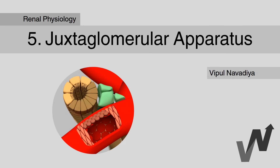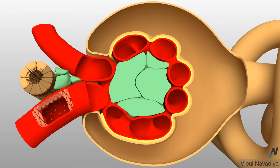In this video, we will learn about the juxtaglomerular apparatus. As the name suggests, it is an apparatus located near the glomerulus.